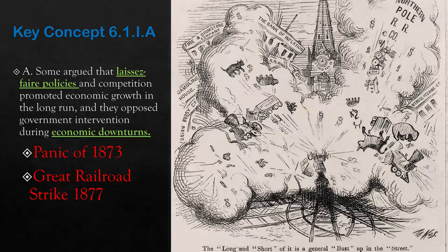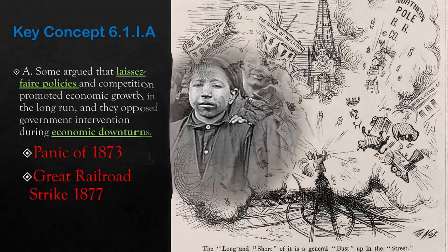Needless to say, this became very violent. Historians believe somewhere around 100 people in total are going to die as a result of this Great Railroad Strike. But this starts to bring a lot of men in various industries in this growing industrial America to see the need to protect themselves, and unions are going to start to come in order to bring that protection.